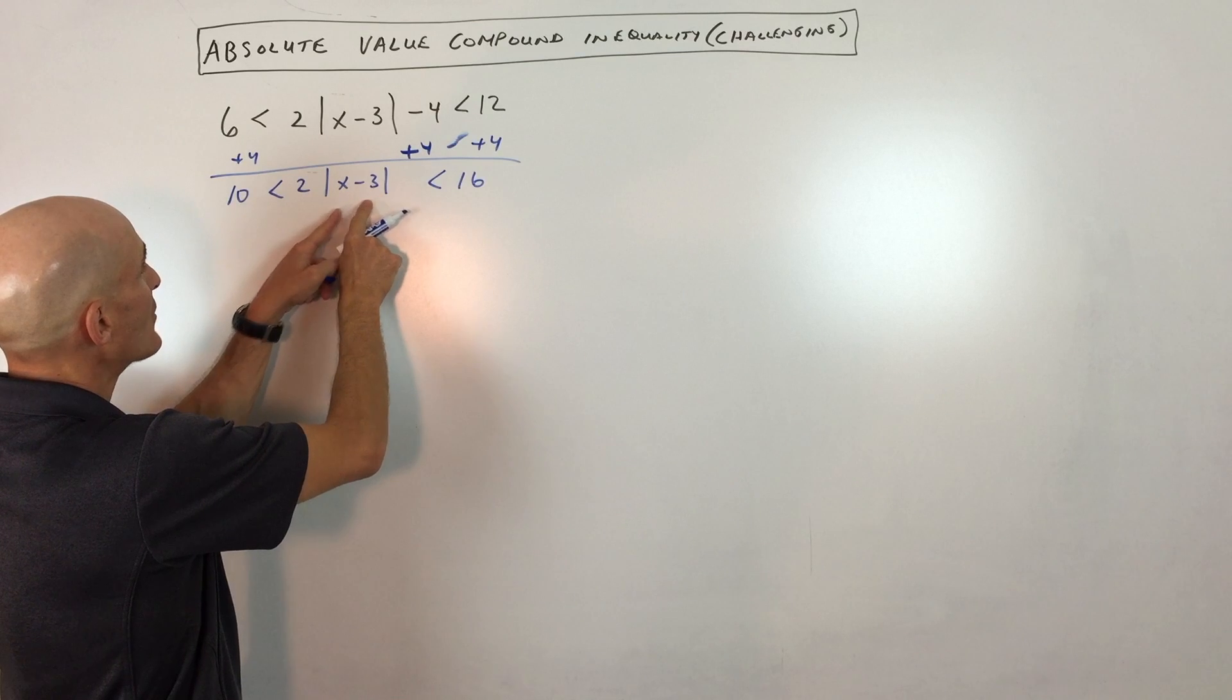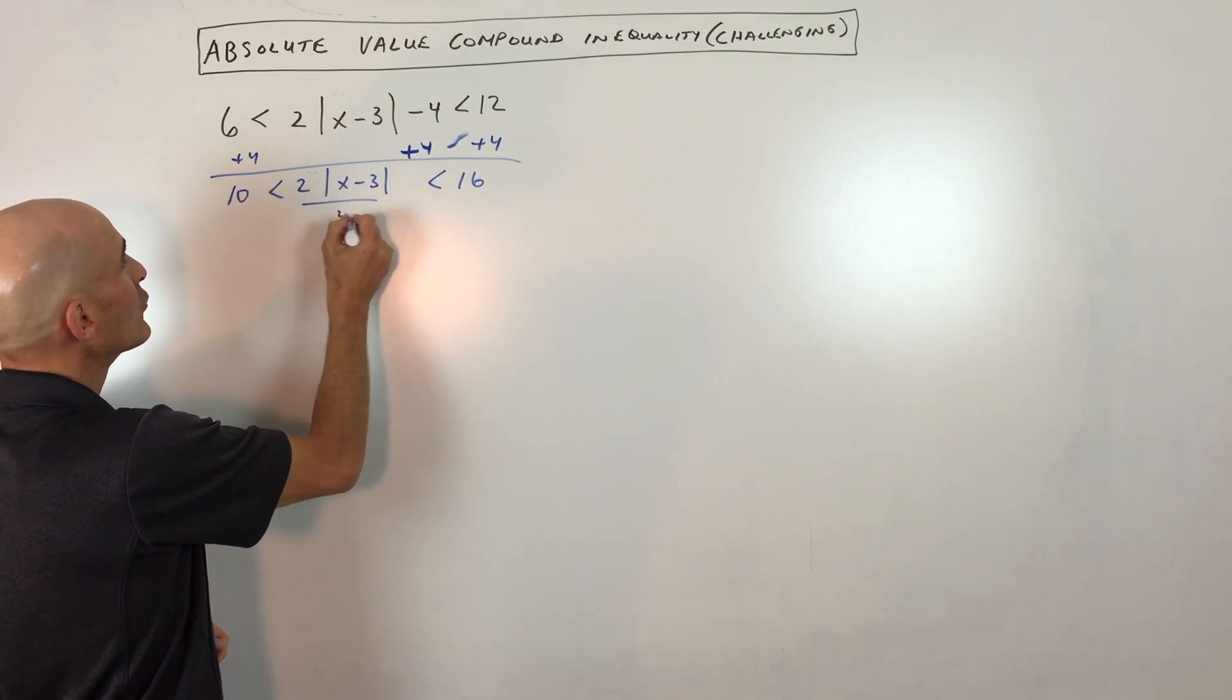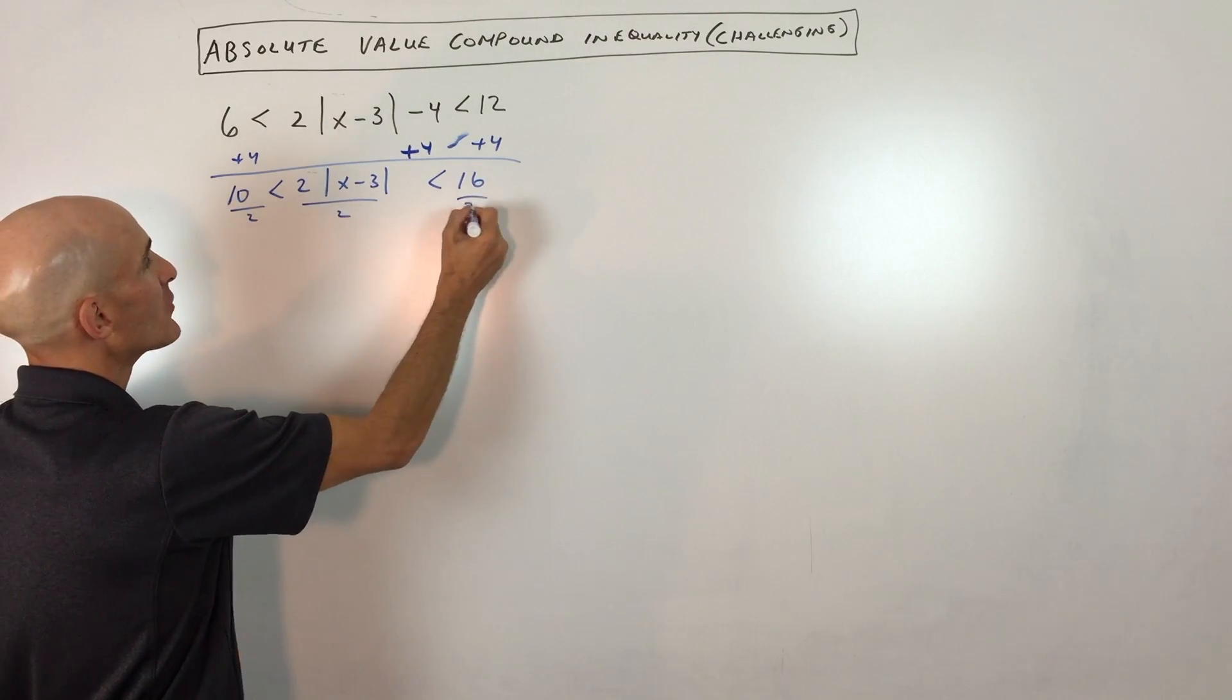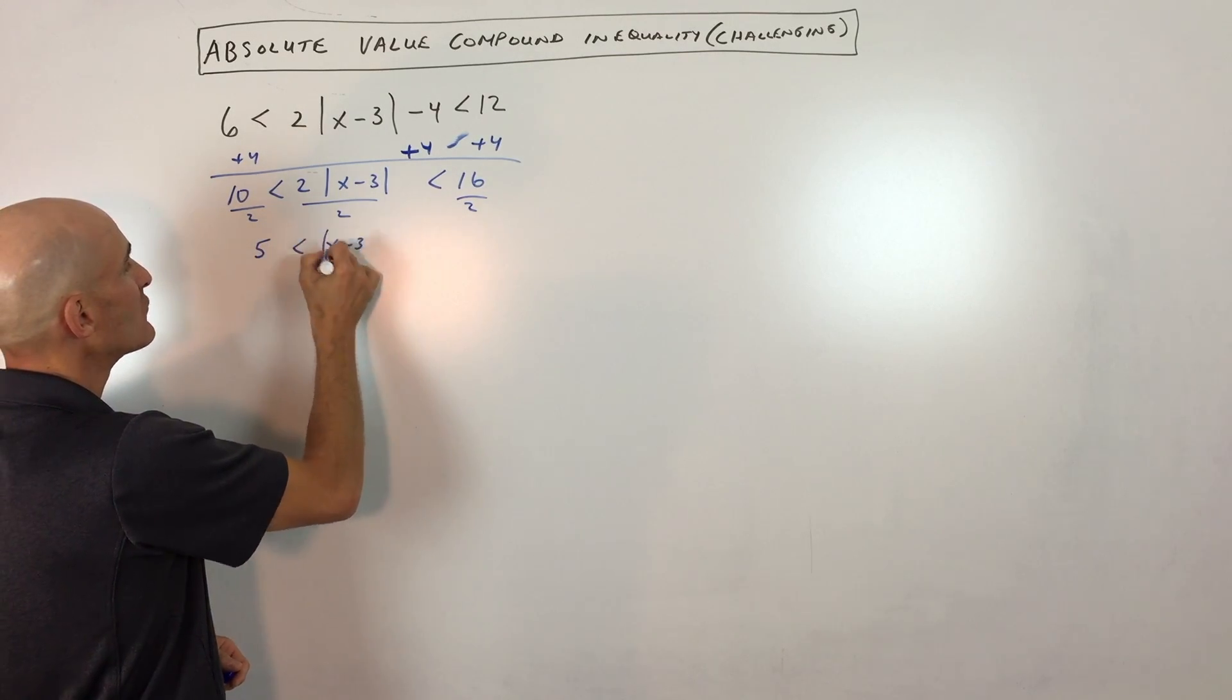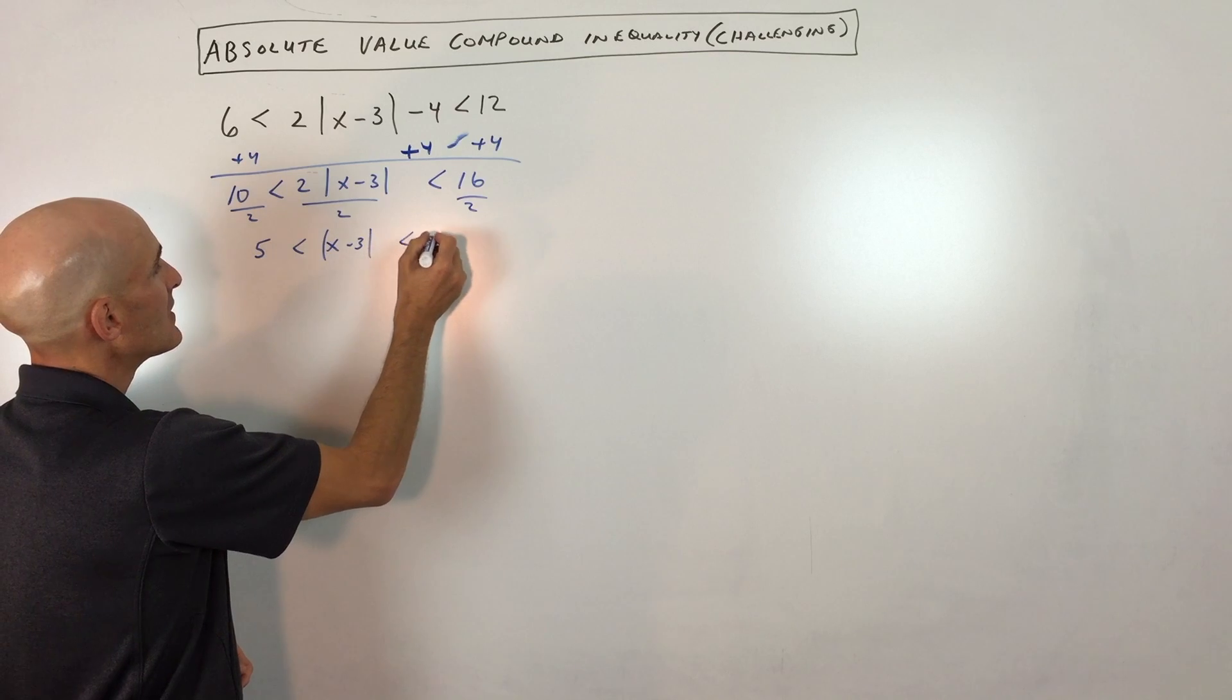Still working from the outside in, we're going to divide the middle by 2, the left side by 2, and the right side by 2. So now we have 5 is less than the absolute value of x minus 3 is less than 8.